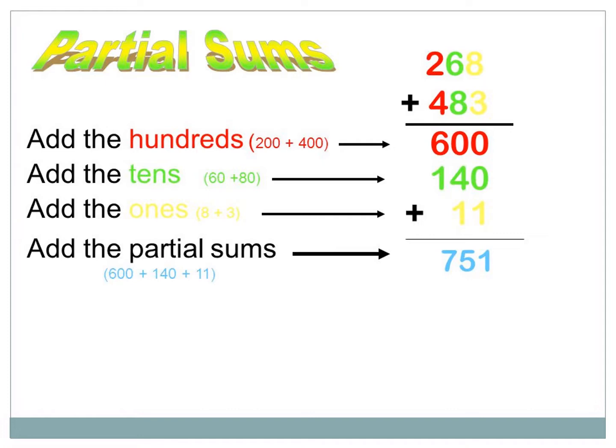Add the ones. Look at the ones place. For the first number, what is the ones place? It's 8. Also in the second number, the ones is 3. So we can add 8 plus 3 to find 11. Now add all the partial sums: 600 plus 140 plus 11, and you will find the sum is 751.